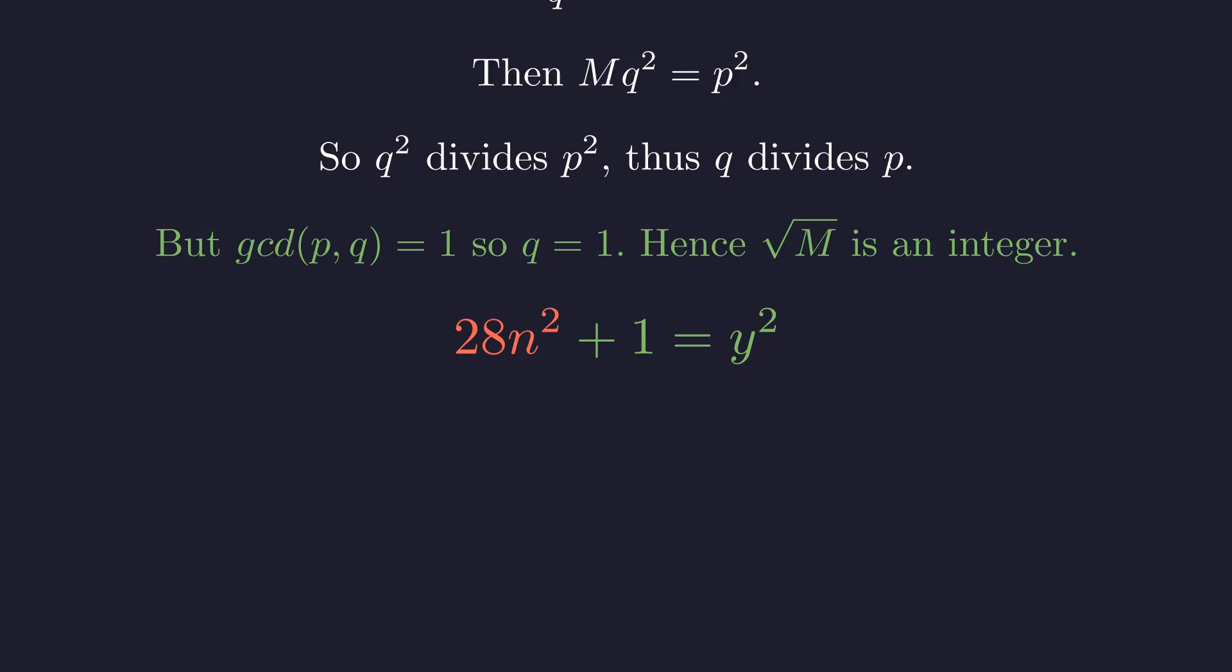Rearranging this equation will reveal its underlying structure. The result is a form of Pell's equation. The problem is now reduced to finding integer solutions y and n that satisfy this relation.